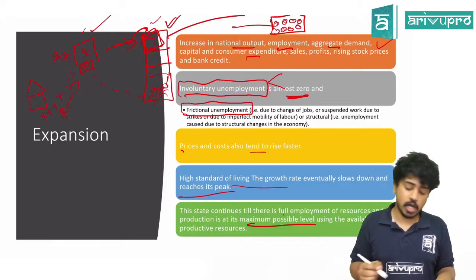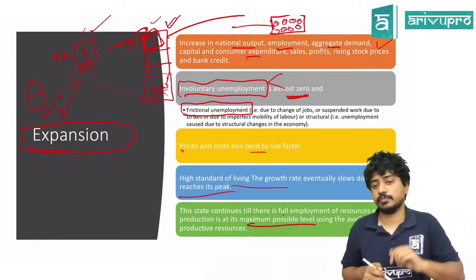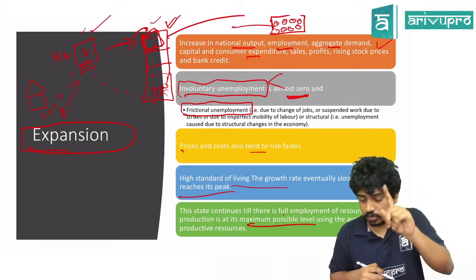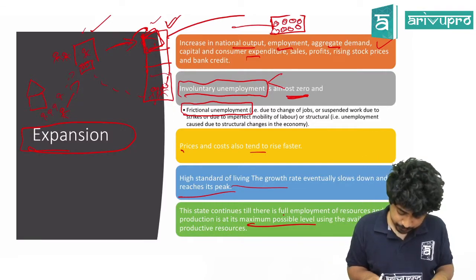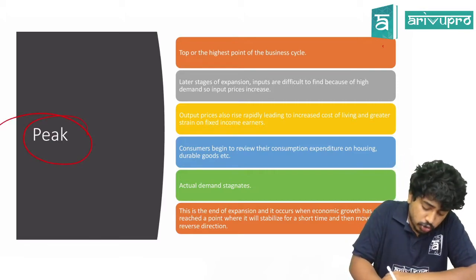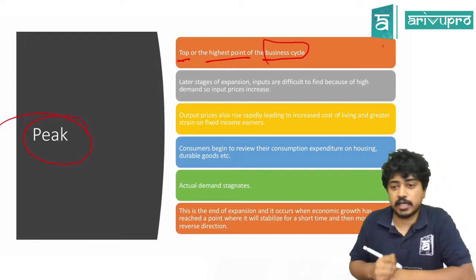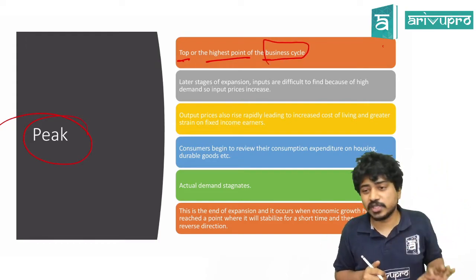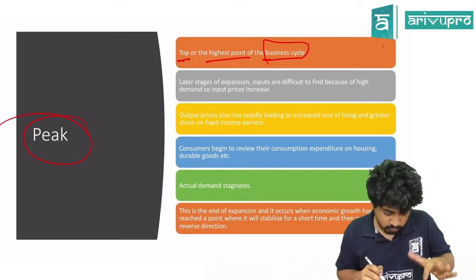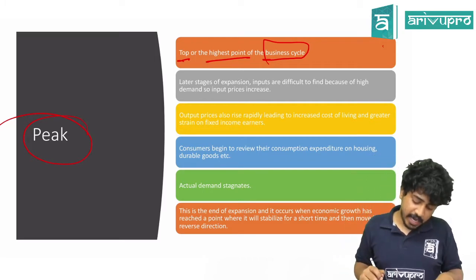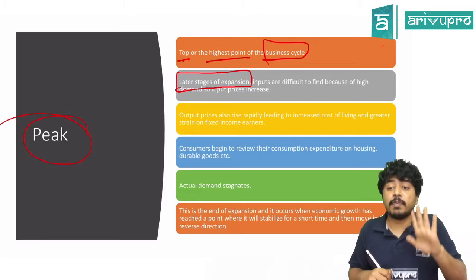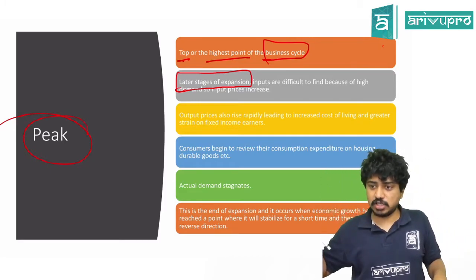All these characteristics we saw are called expansion — the first stage of the business cycle. Second is peak — the top and highest point of the business cycle. Peak is the later stage of expansion, meaning the last stage of expansion is called peak.